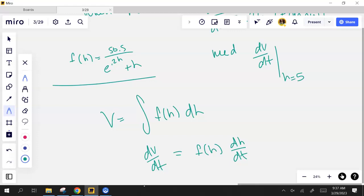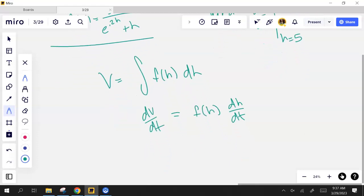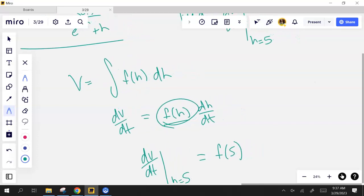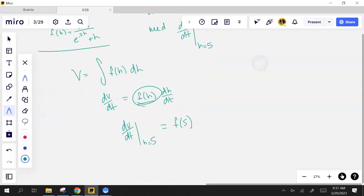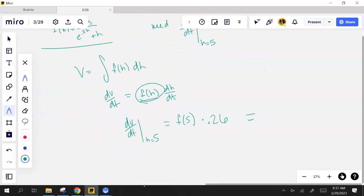Now it's just a plug and chug thing because I can use my calculator. This is probably still in your y1. So dv/dt when h equals 5 is whatever this comes out to be times dh/dt. And they gave me dh/dt. dh/dt was 0.26. That's about... 6.26 times 0.26 comes out to 1.694 cubic feet per minute.